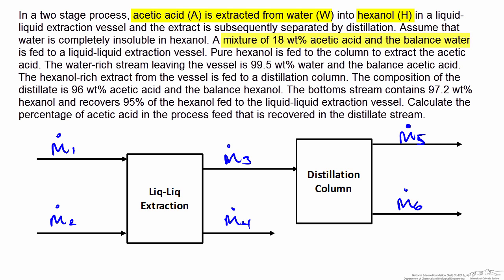For example, we have information about the feed to the liquid-liquid extraction column: a mixture of 18 weight percent acetic acid and the balance water. So we apply that to stream 1, where the mass fraction of acetic acid is 0.18 and the mass fraction of water must be 0.82. The problem also states that the other feed to the extraction column is pure hexanol, which corresponds to stream 2.